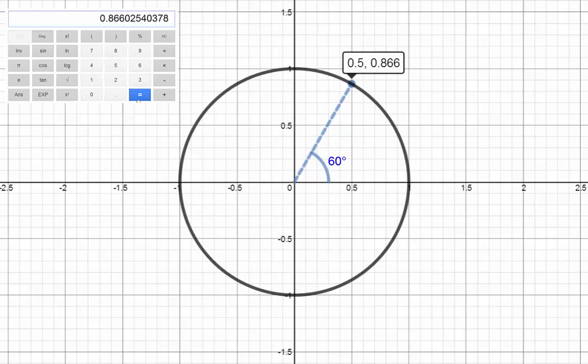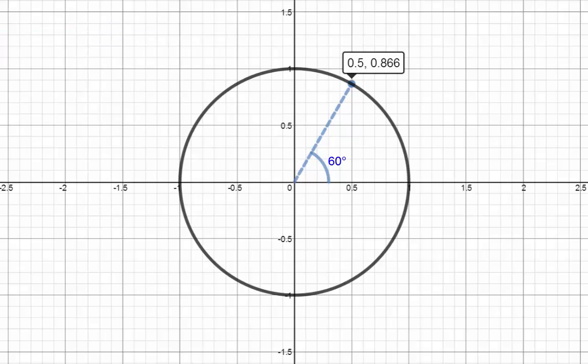There are some sin and cos values we can work out just by thinking about them. For instance, what are sin and cos of 90 degrees? The point 90 degrees corresponds to 0,1. So cos 90 is 0 and sin 90 is 1.